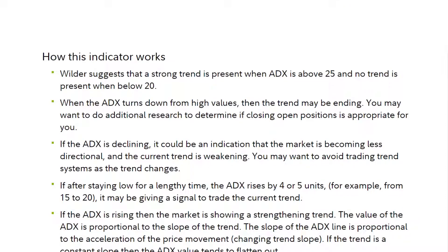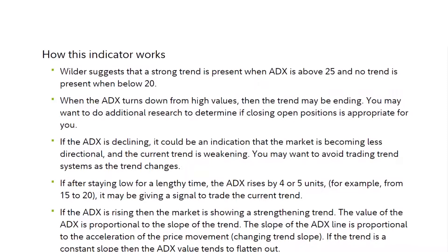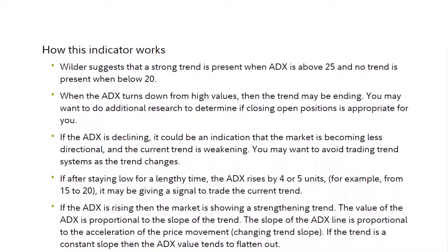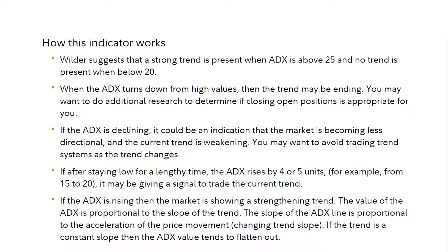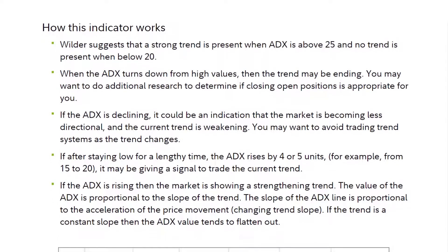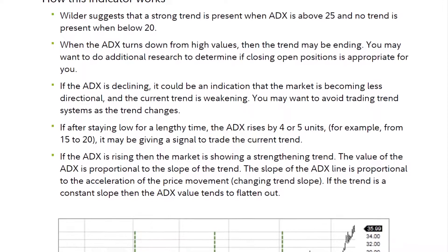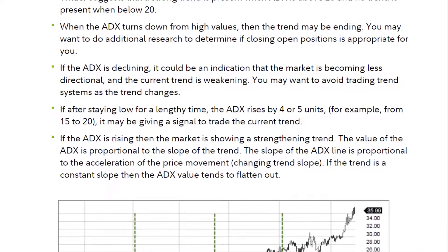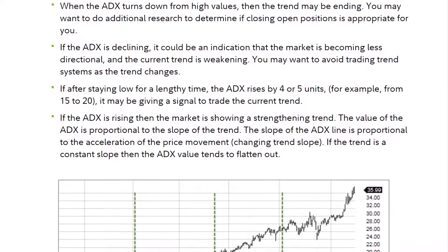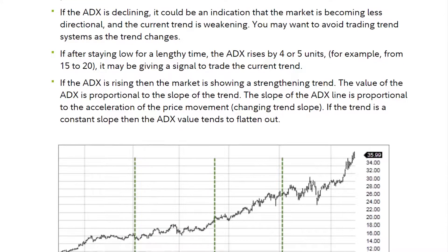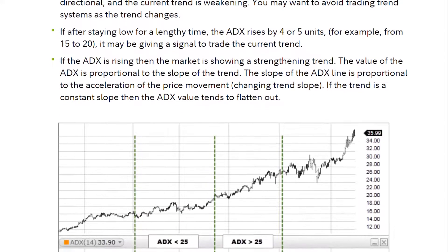How this indicator works: Wilder suggests that a strong trend is present when ADX is above 25 and no trend is present when below 20. When the ADX turns down from high values, then the trend may be ending. You may want to do additional research to determine if closing open positions is appropriate for you. If the ADX is declining, it could be an indication that the market is becoming less directional and the current trend is weakening. You may want to avoid trading trend systems as the trend changes.